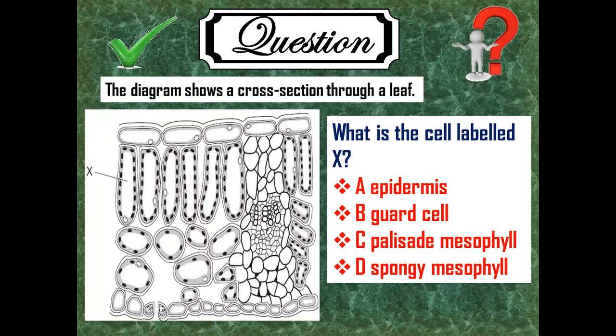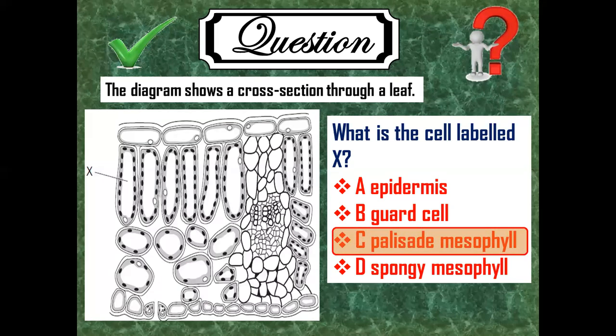Here we have the diagram shows a cross-section through a leaf. What is the cell label X? The cell label X belongs to the palisade mesophyll. Why? Because these are column-like cells and tightly packed together.